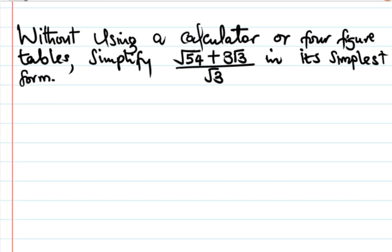Let's see the solution of this problem. The question says, without using a calculator or four-figure tables, we should simplify radical 54 plus 3 radical 3 divided by radical 3, and we should leave our answer in its simplest form.